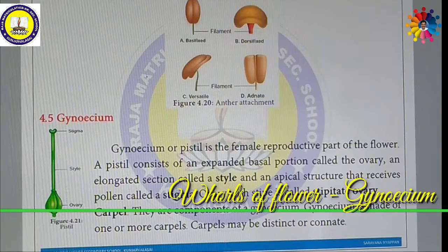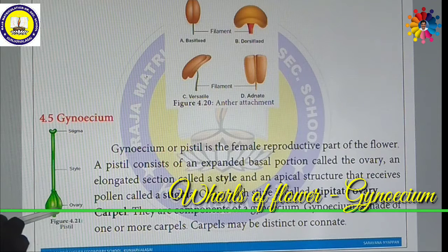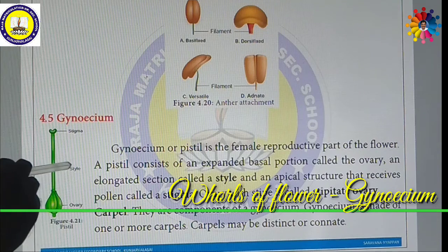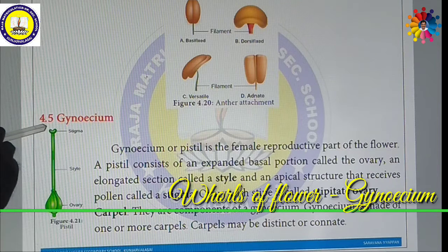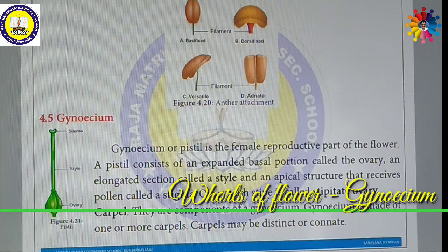Students, now we are going to discuss about the Gynoecium. Gynoecium is also called as Pistil. A Gynoecium or Pistil has a balloon-like basal part called the Ovary, a tube or thread-like structure called the Style, and a platform-like structure at the tip called the Stigma. So a Gynoecium consists of Ovary, Style, and Stigma.